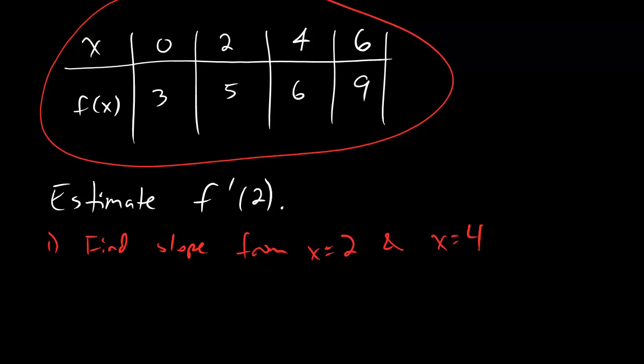But now here's the thing, dudes. There's nothing really special about starting at 2 and moving to the right. We could also start at 2 and move to the left. So that's the next thing we're going to do. We're also going to find slope from, and now let's go from x equals 0 to x equals 2.